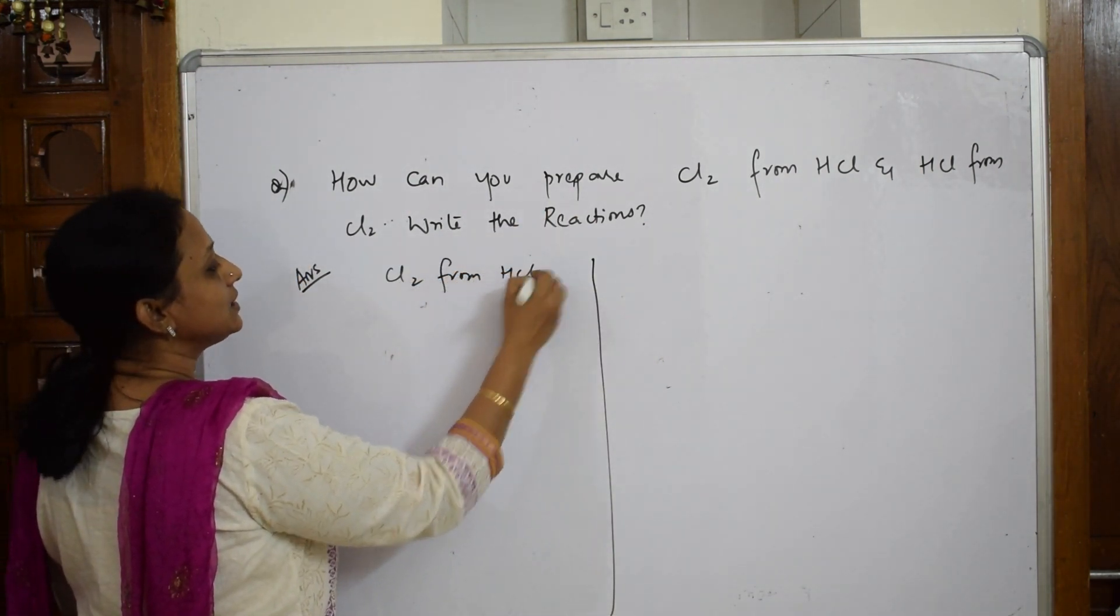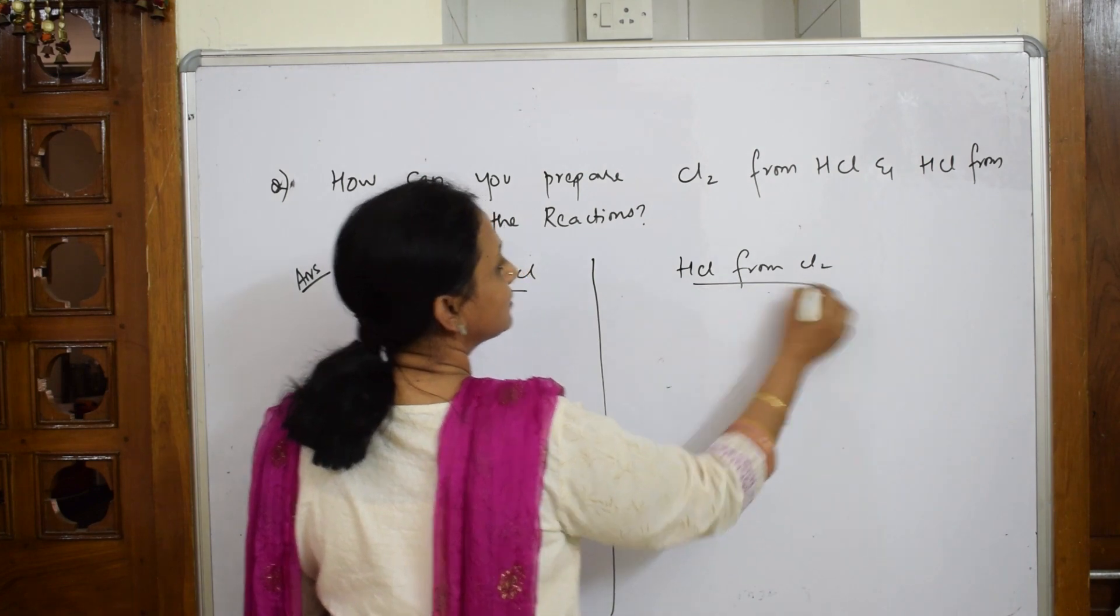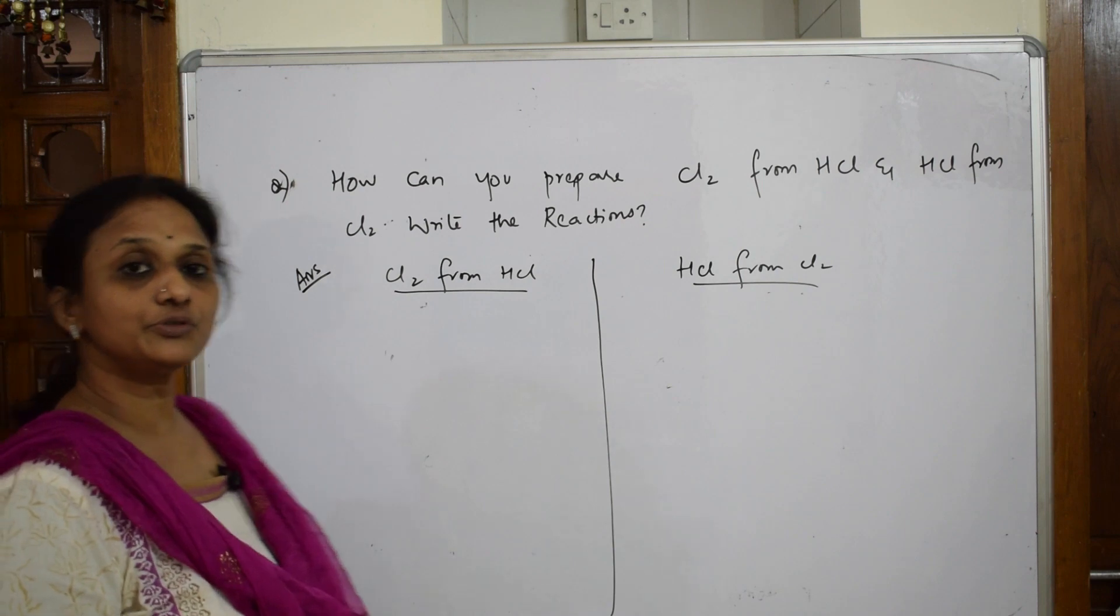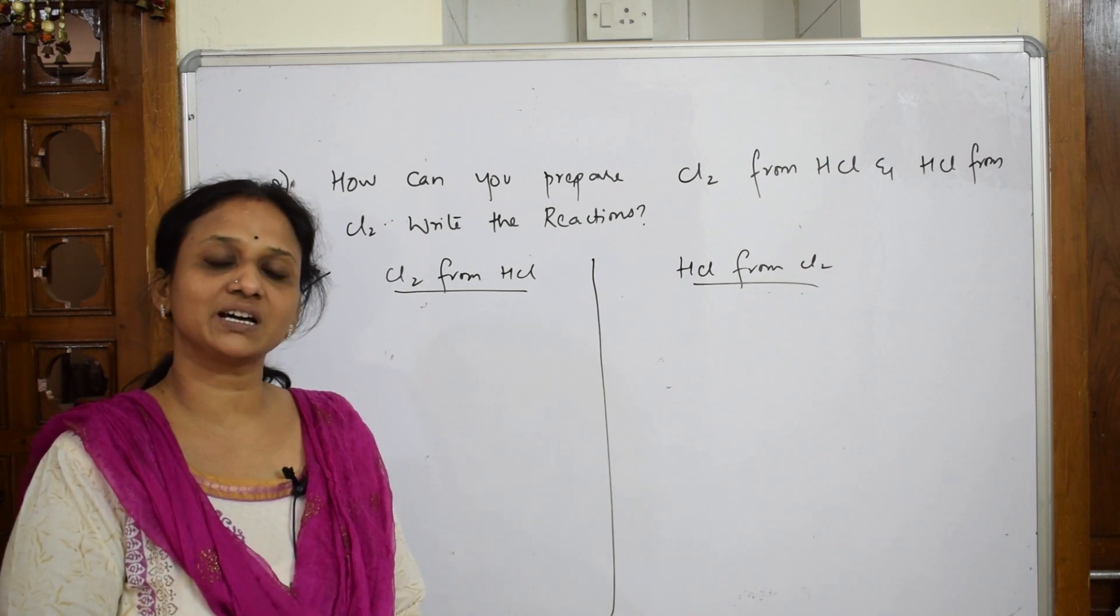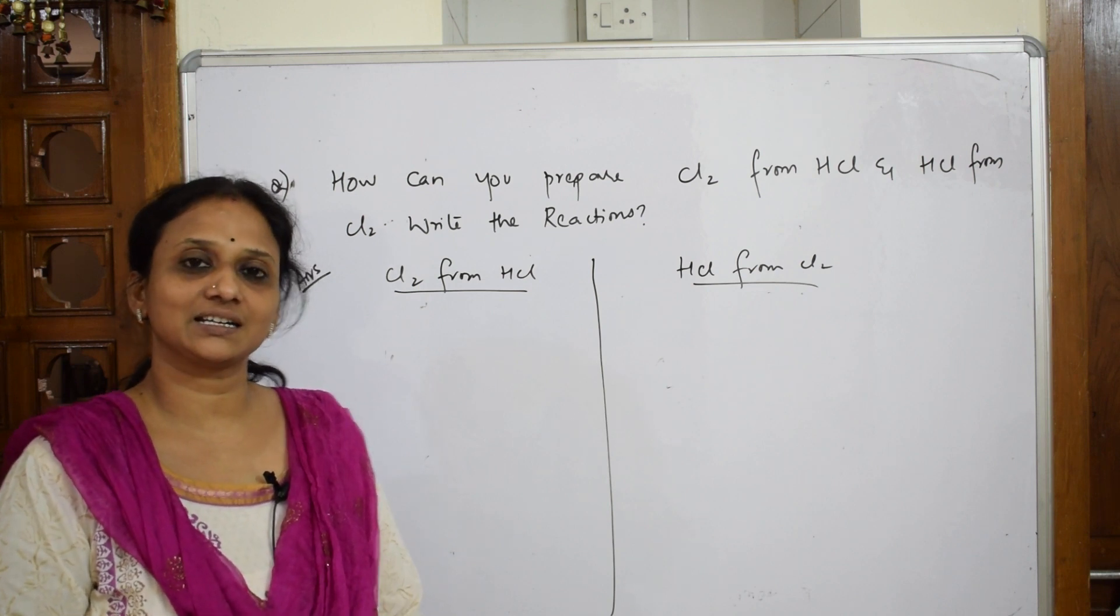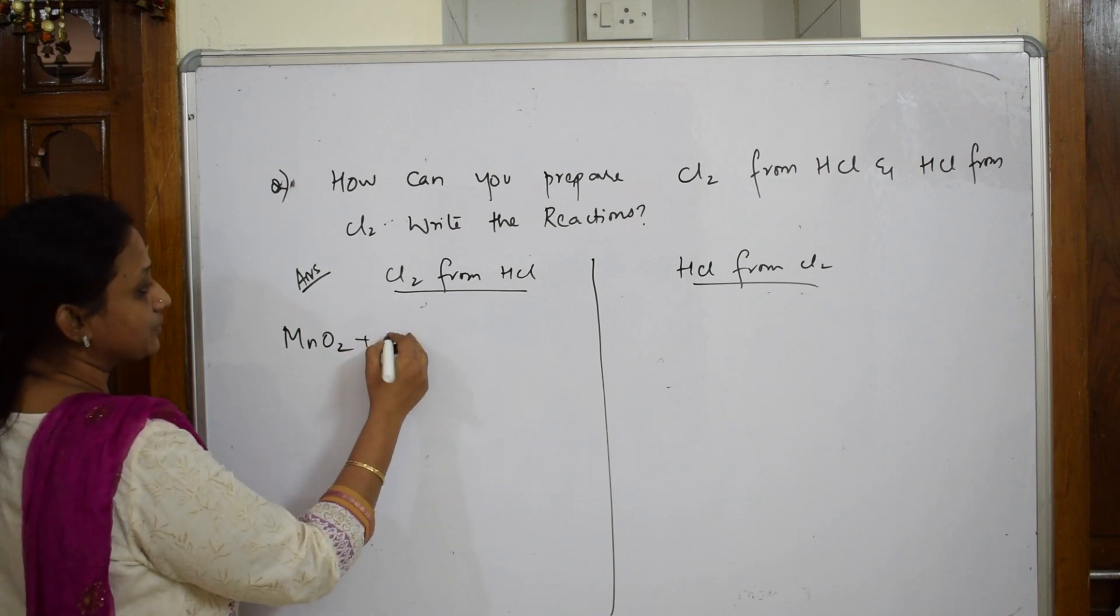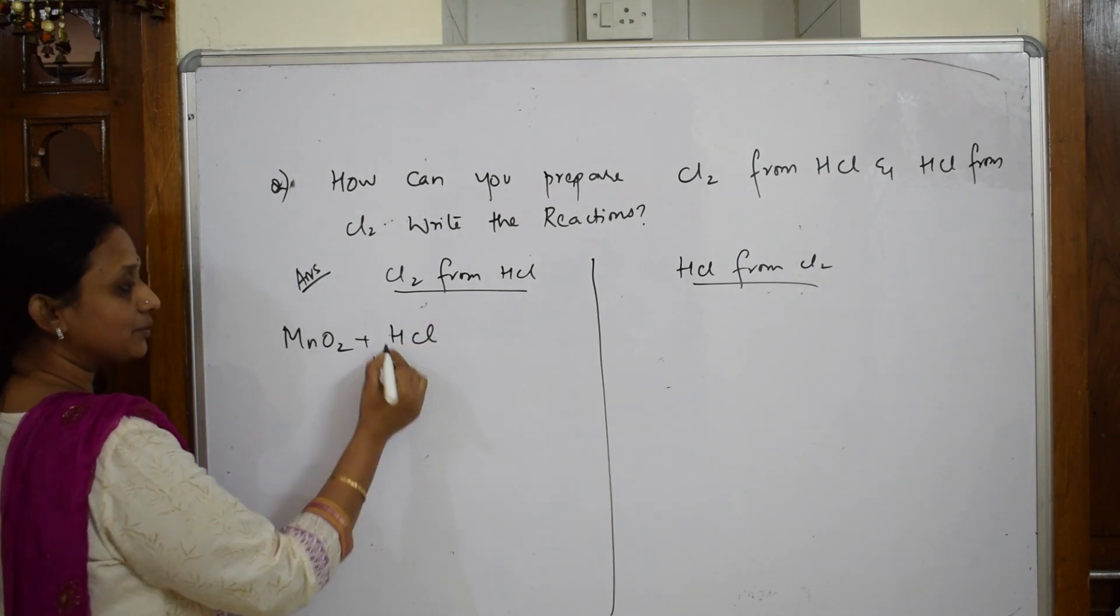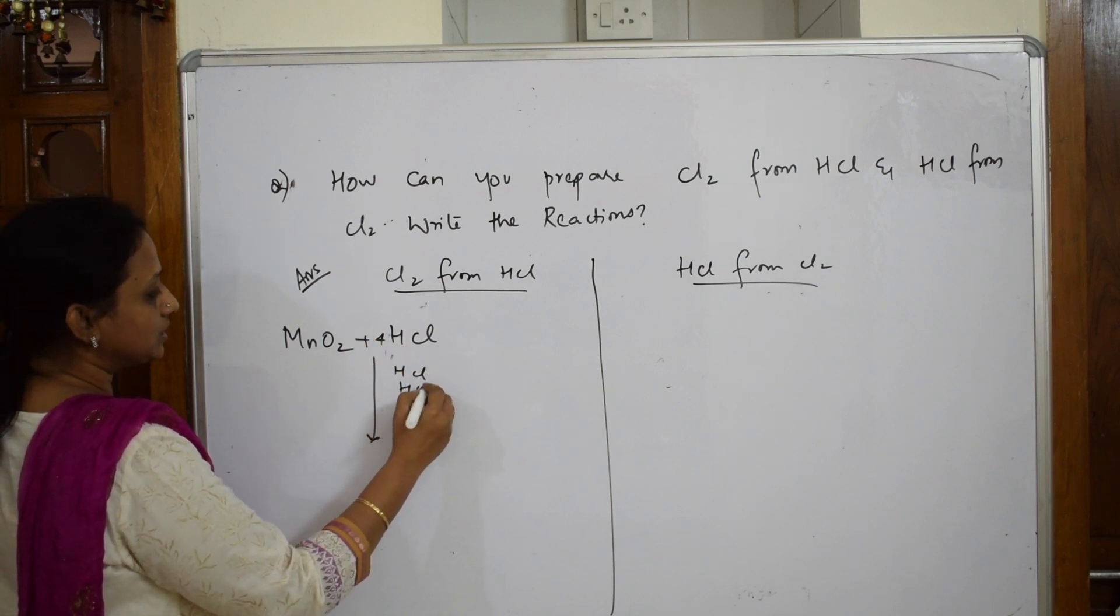Prepare chlorine from HCL—both are very easy actually. Whenever you have to prepare chlorine gas from HCL, we are going to use a catalyst that is manganese dioxide. There's a confusion whether it acts as an oxidant or a catalyst—here I'm going to take it as a catalyst. To this I'm going to add HCL. I'll take four moles of HCL.